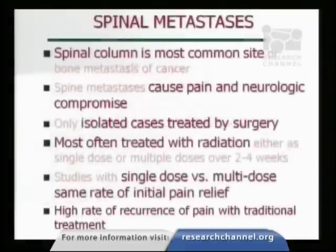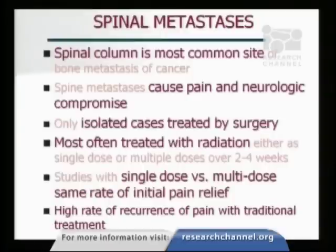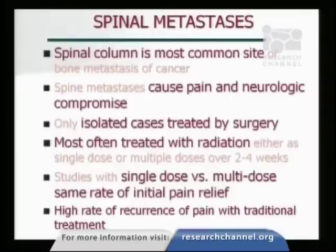In terms of spinal metastases, this is another very active area. The spinal column is the most common site of bone metastases and causes a lot of pain and neurologic compromise, particularly if it starts to press onto the spinal cord. Only isolated cases are actually treated by surgery, so radiation typically is the treatment of choice. Conventional radiation courses last about two to three weeks, and single large dose versus multi-treatment studies find similar pain relief. However, there's a fairly high recurrence rate of pain because the radiation dose is very limited — the dose required to control the tumor long-term is prohibited by normal tissue exposure.